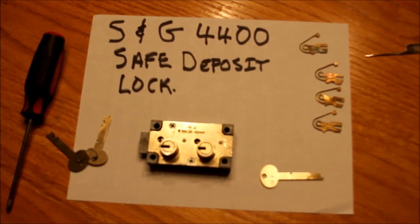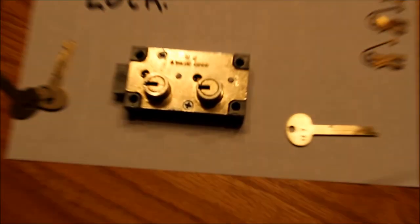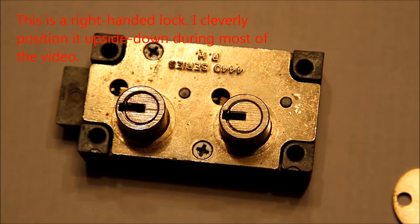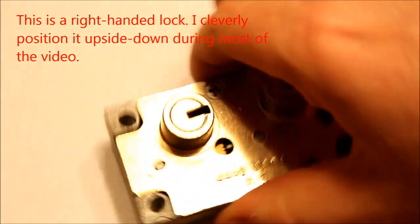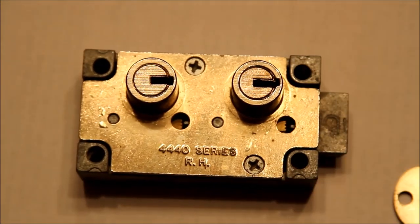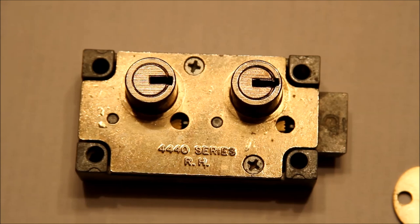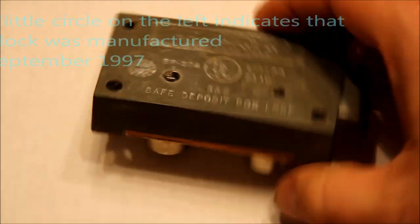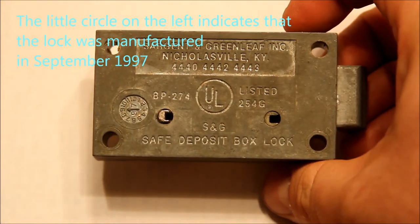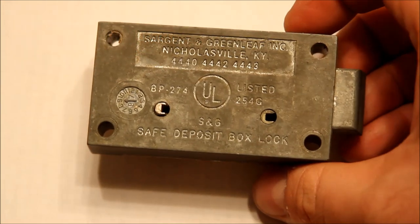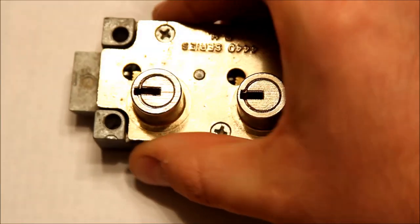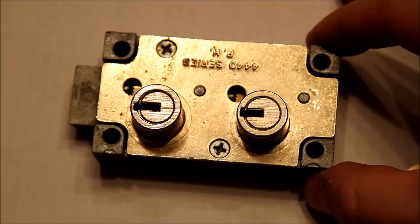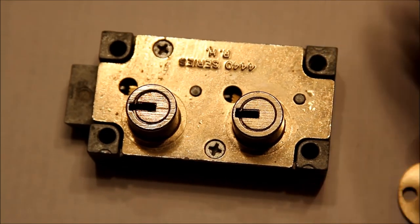What I have here for you is an SMG Series 4400 Safe Deposit Lock. This is the kind you'd find in a bank, in a safe deposit box. You can see all the UL endorsements and so forth on the back. Now, this is an interesting lock for a couple of reasons. In many ways it is a high security lock, and in many ways it's not. Let me just show you the operation of it.